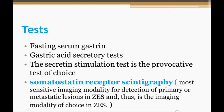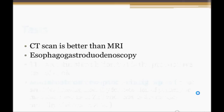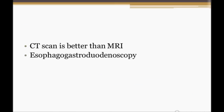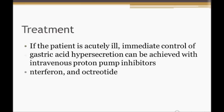The investigation of choice is the CT scan, which is better than MRI. If given the option of CT scan or MRI, choose the CT scan since it has better results compared to MRI. Esophagogastroduodenoscopy (EGD) can also be done to look for an ulcer.